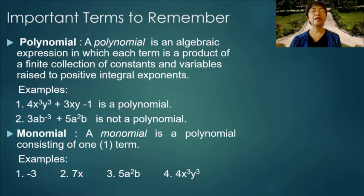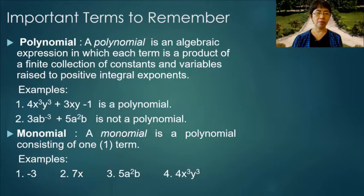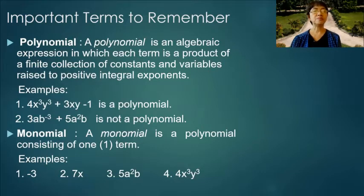Polynomial: a polynomial is an algebraic expression in which each term is a product of a finite collection of constants and variables raised to positive integral exponents. Example 1: 4x cubed y plus 3x cubed plus 3x minus 1 is a polynomial. Example 2: 3ab to the negative 3 plus 5a squared b is not a polynomial because there is a negative exponent in the first term.